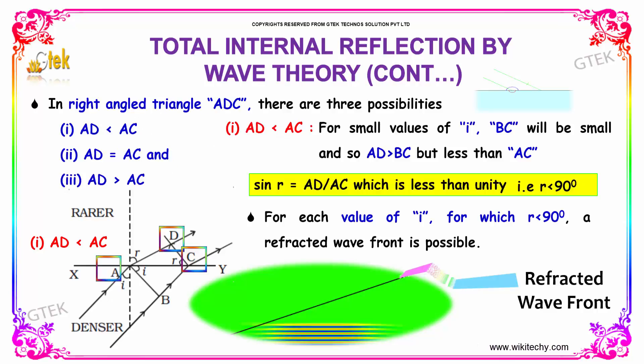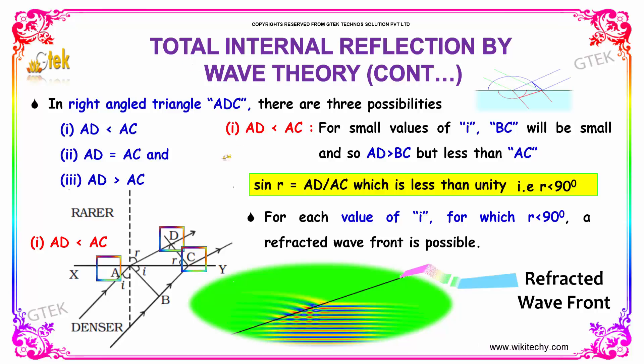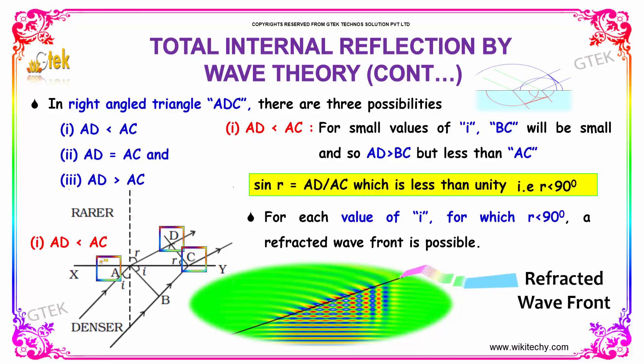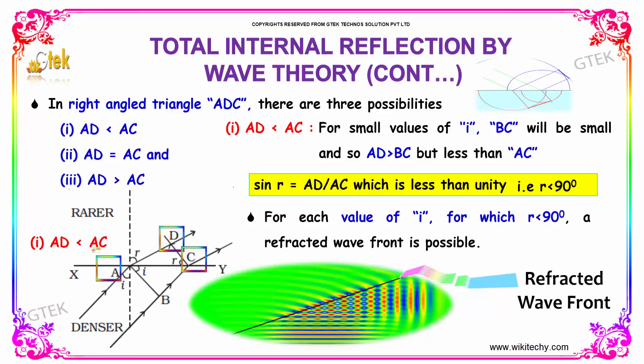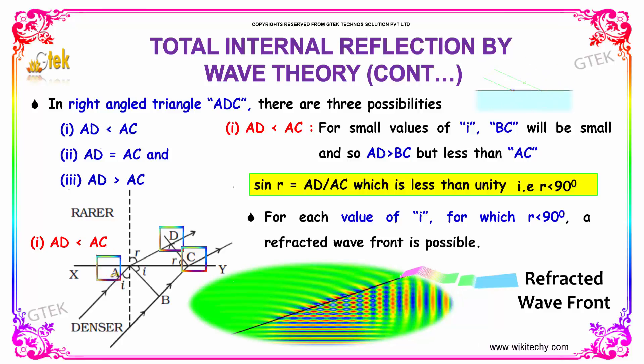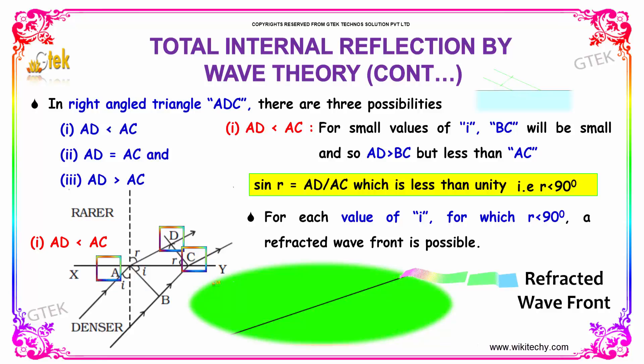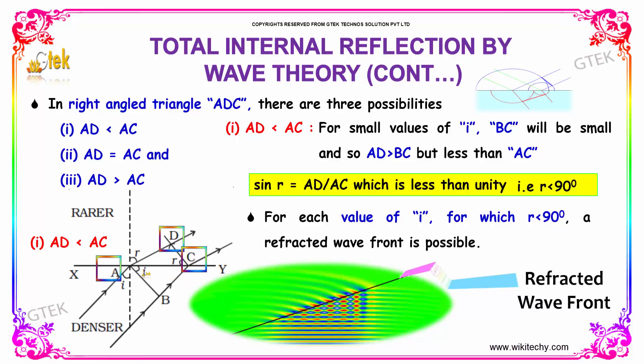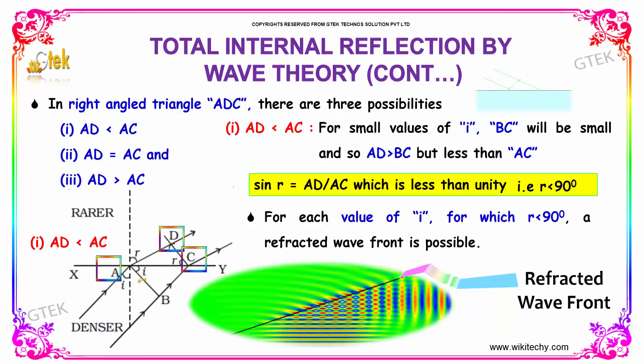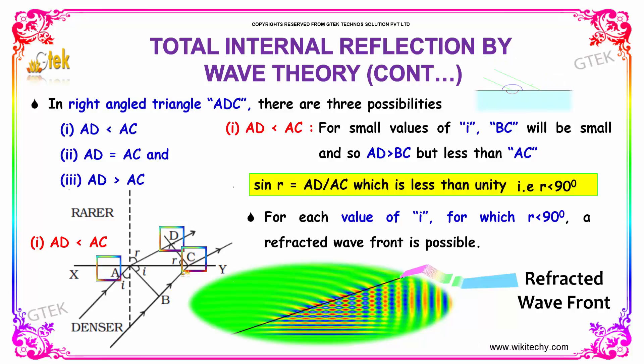In this right angled triangle ADC, you will be having three possibilities. AD can be lesser than AC. For small values of i, BC will be really small. So, AD is greater than BC but less than AC.